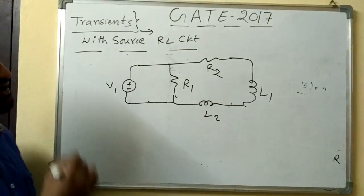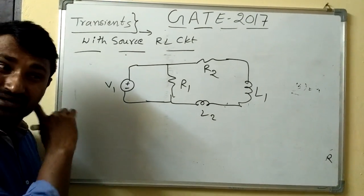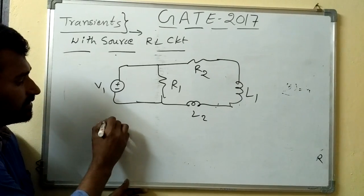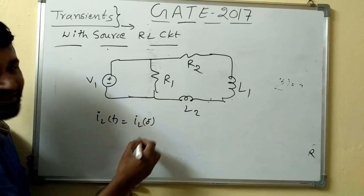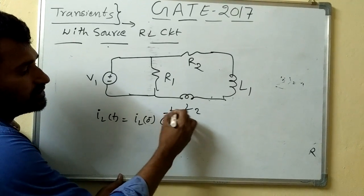This is a simple example I am taking, some V1, how to solve this type of problem, this is simple, same procedure. But in terms of iL of t, I will get iL of 0 minus, if this is source free, into e power minus t by tau.